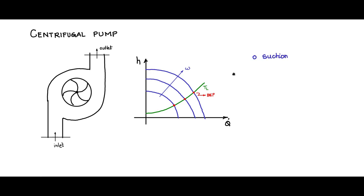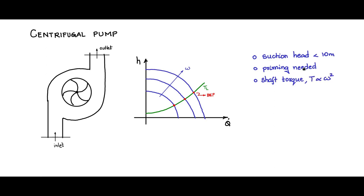Some important points: suction head should be less than 10 meters, because by suction you cannot exceed 10 meters; in practice, less than 6 meters is achievable due to friction losses. Priming is needed — you must fill the centrifugal pump with water first, then switch on the motor. The shaft torque as seen on the motor shaft is proportional to omega squared. The head is dependent on flow rate and speed.